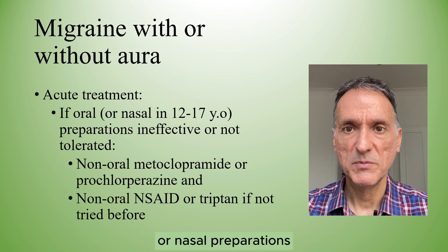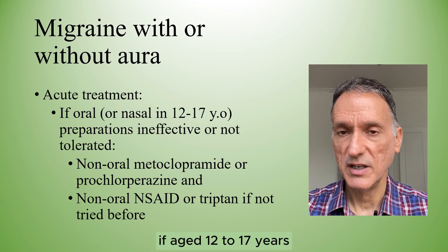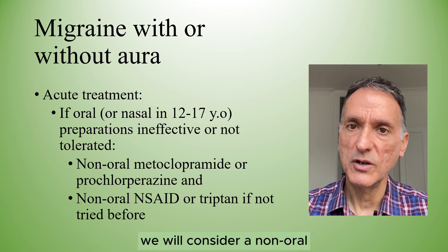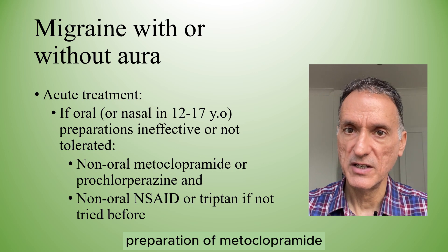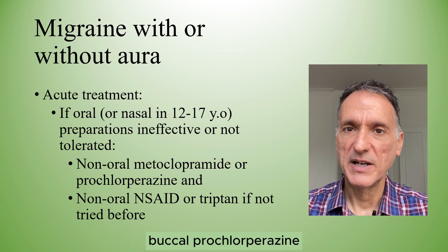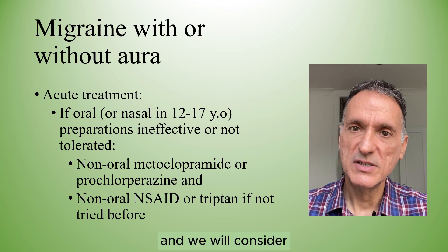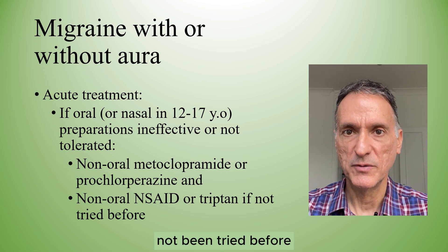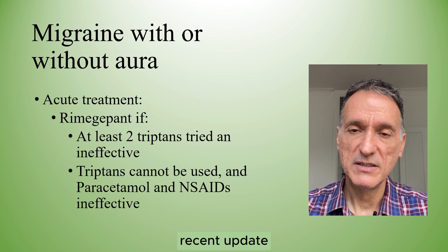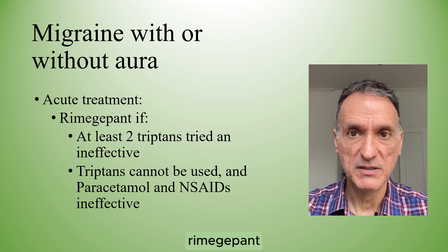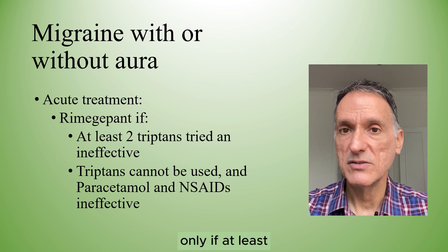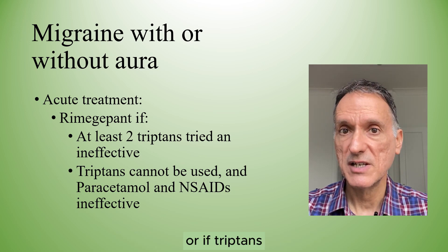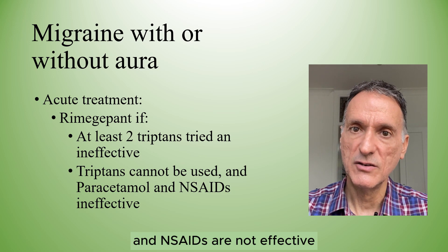If oral or nasal preparations, if aged 12 to 17 years, are ineffective or not tolerated, we will consider a non-oral preparation of metoclopramide or prochlorperazine, for example buccal prochlorperazine, and we will consider adding a non-oral NSAID or triptan if they have not been tried before. Following a recent update, NICE says that we can use rimegepant only if at least two triptans have been tried but were ineffective, or if triptans cannot be used and paracetamol and NSAIDs are not effective.